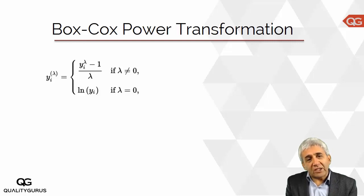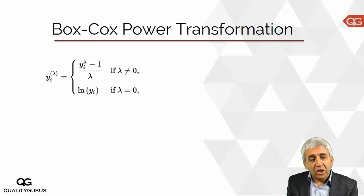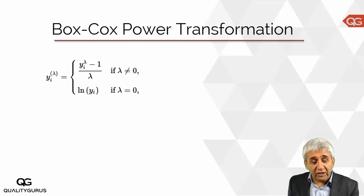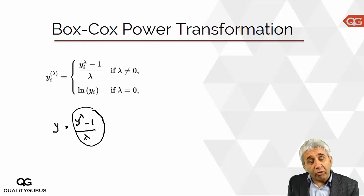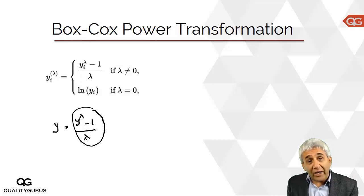Earlier we said that we can transform data by taking the square or taking the logarithm. The most commonly used transformation method is Box-Cox power transformation. The formula is: Y transformed equals Y to the power lambda minus 1, divided by lambda. You take every value of Y and raise it to the lambda power. For example, when we said Y squared, that power of 2 is lambda.